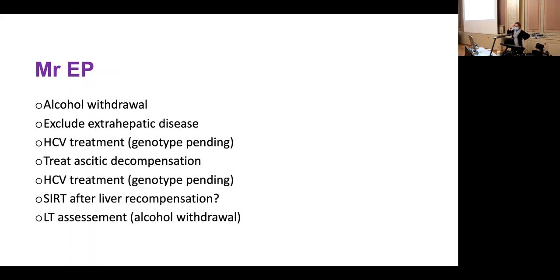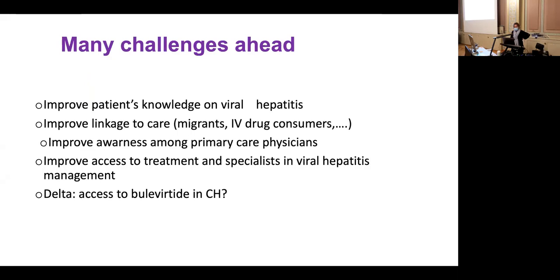Complementary CT scan of the lungs and bone scintigraphy were performed, allowing us to exclude extrahepatic HCC. Antiviral treatment is planned once HBV genotyping is complete. Ascites has been recompensated. The HCC at four centimeters with a very elevated AFP is a contraindication for liver transplantation in some Swiss centers, but we hope to downstage and give this 66-year-old man access to transplantation.